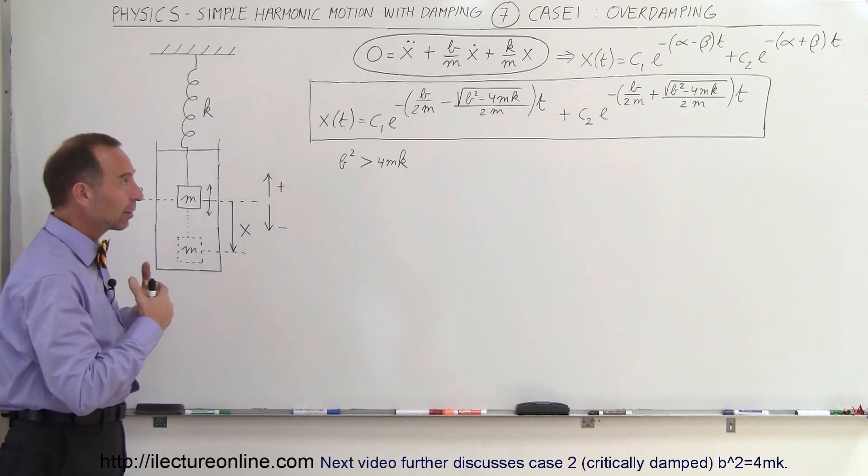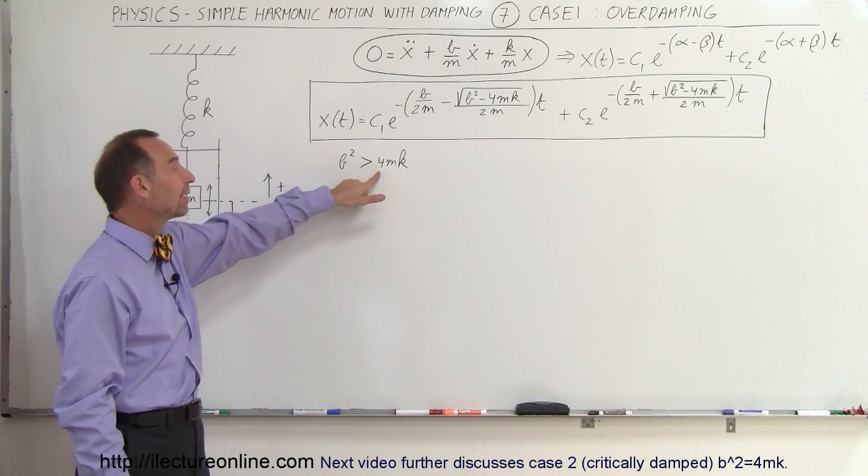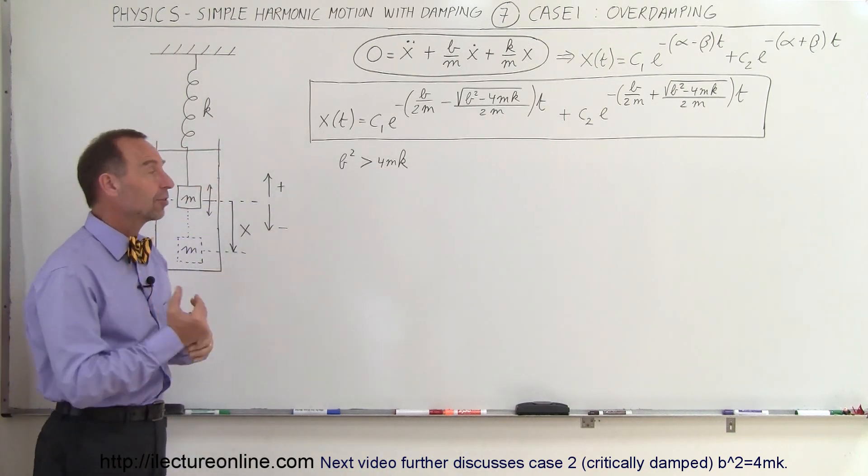And the first case we're going to take a look at is the overdamped case. The case where B squared is much greater than 4mk. Now remember that m is the mass and k is the spring constant.